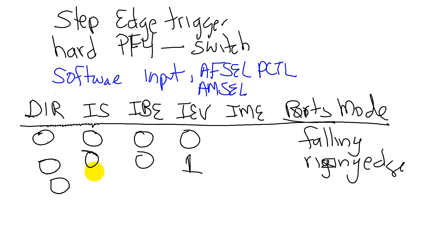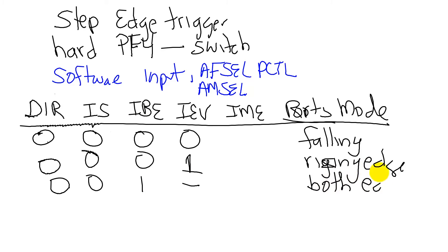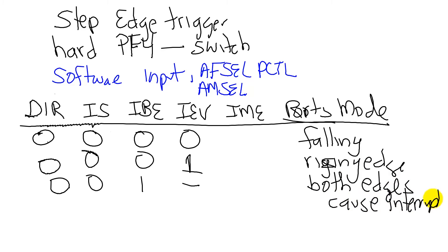Another mode we could potentially use is the both mode, where IBE is set to one — it doesn't matter what IEV is in that case. In that mode we're going to get both interrupts; both edges will cause an interrupt. So if pressing the switch, it would interrupt on both the touch and the release.